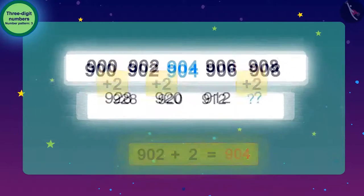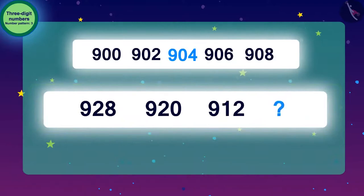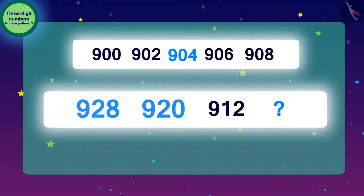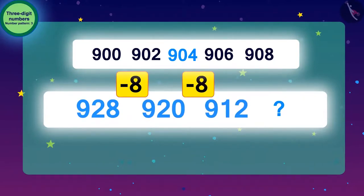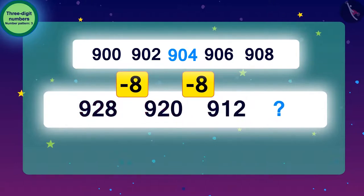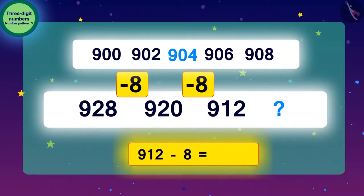Our first pattern is complete. Now, we will find the number pattern of the second blank. To get from 928 to 920, we have to go 8 steps back — we subtract 8. To go from 920 to 912, we subtract 8 again. Similarly, to find the next number, we subtract 8 from every number. The answer is got by subtracting 8 from 912, that is 904.